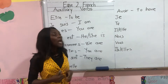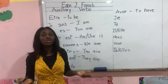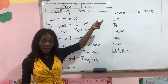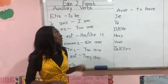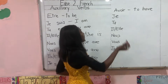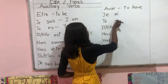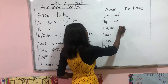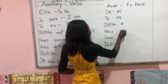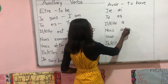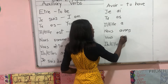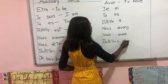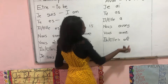So the verb avoir. Avoir means to have. Now how do you conjugate this verb in present tense? The conjugations are: j'ai, tu as, il a, elle a, nous avons, vous avez, ils ont, elles ont.